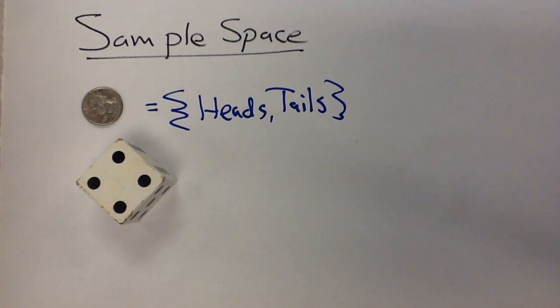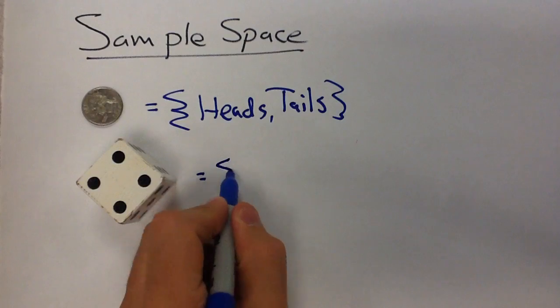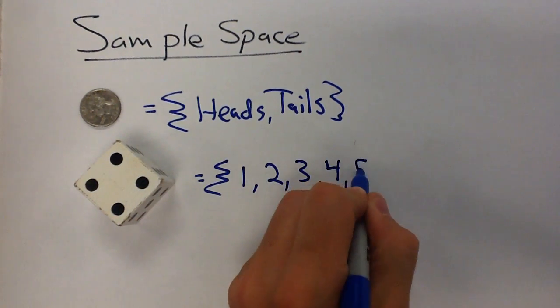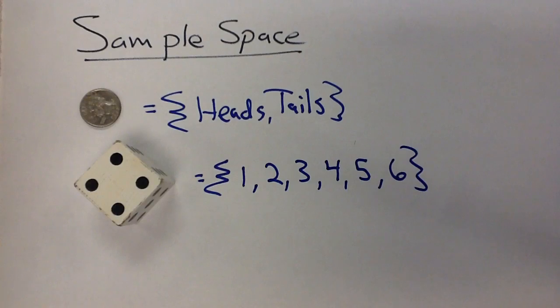Another problem we have is if we roll a dice. Now, you roll a six-sided die, you're going to have one, two, three, four, five, six as your sample space. You have six different possible outcomes.